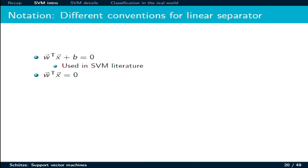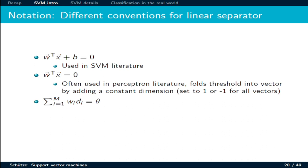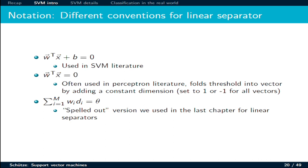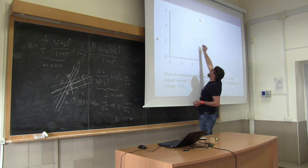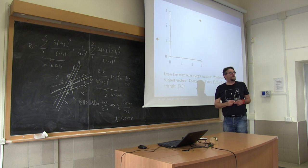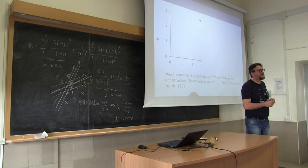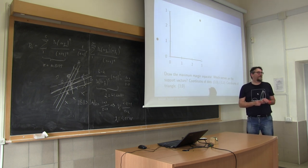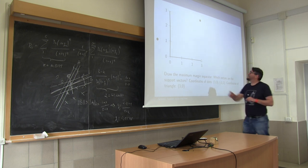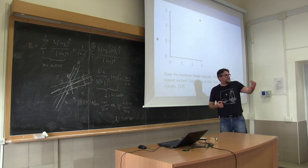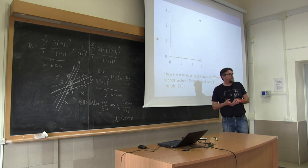In the literature, depending on the source, you could have different definitions but the concept is always the same — it's only a matter of notation. Let's consider this example: we have to separate the two classes. Looking at the picture it's obviously possible, and it will be a line that will go over there. What kind of strategy could you use to identify this line? Basically we have to find a line in this two-dimensional space that will maximize the distance between the two points of the two classes to this line.